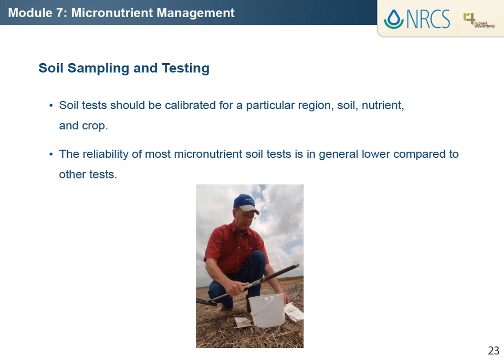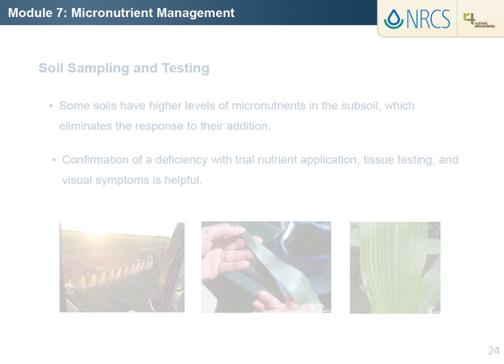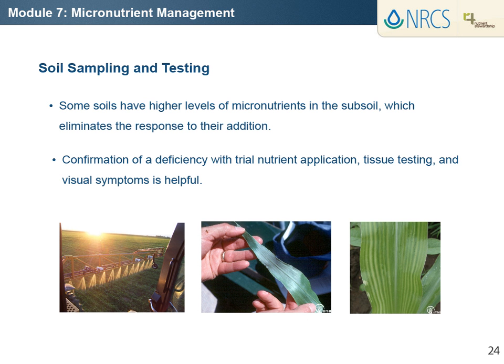The reliability of most micronutrient soil tests compared to other tests, like phosphorus and potassium for example, is in general lower. Also, some soils with low micronutrient levels in the surface layer may not respond to fertilization because they have higher available levels of the nutrient in the subsoil. Therefore, trial nutrient application, tissue testing, and visual symptoms are helpful to confirm deficiency.